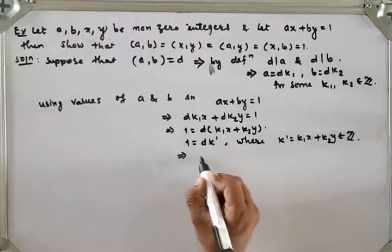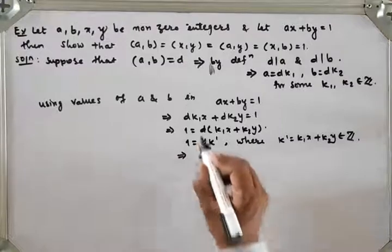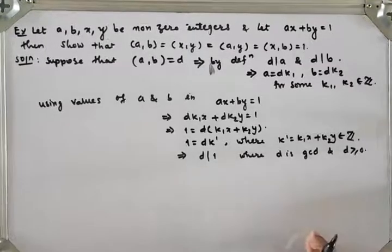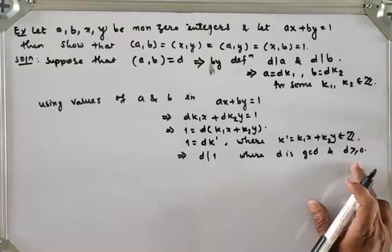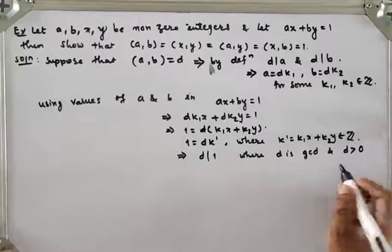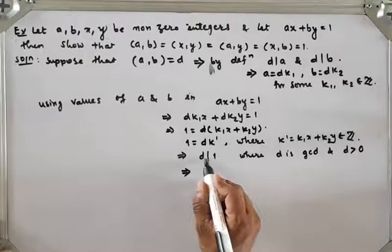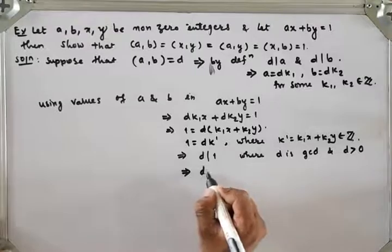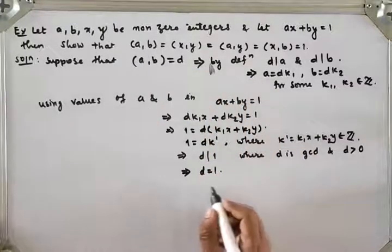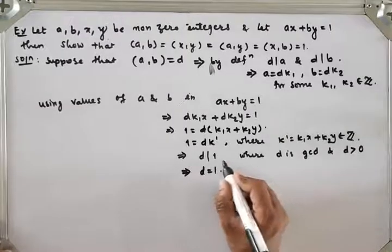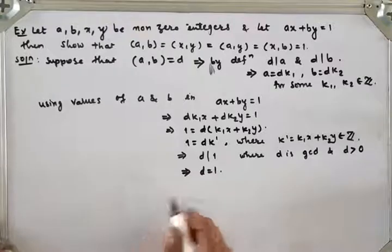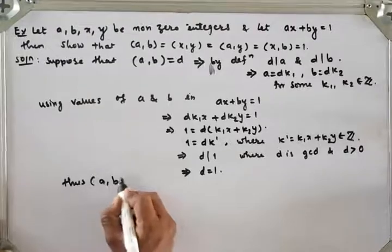Then by using definition of divisibility, D divides 1, where D is the GCD and D is always strictly greater than 0. So D is not equal to 0. GCD is always positive. The only positive number that divides 1 is 1 itself, so D equals 1. Therefore GCD of A and B is equal to 1.